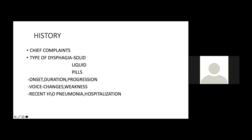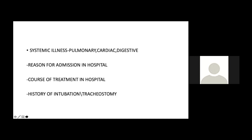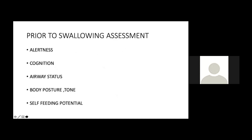History should also cover any recent pneumonia or hospitalization, surgery, trauma, illness, medications, addictions such as tobacco or alcohol, family history of muscular dystrophy or diabetes, systemic illness, history of intubation and tracheostomy. Prior to swallowing assessment, we must evaluate the patient's alertness, cognition, airway status, body posture, tone, and self-feeding potential — these determine whether dysphagia exercises, protocols, or maneuvers can be performed.